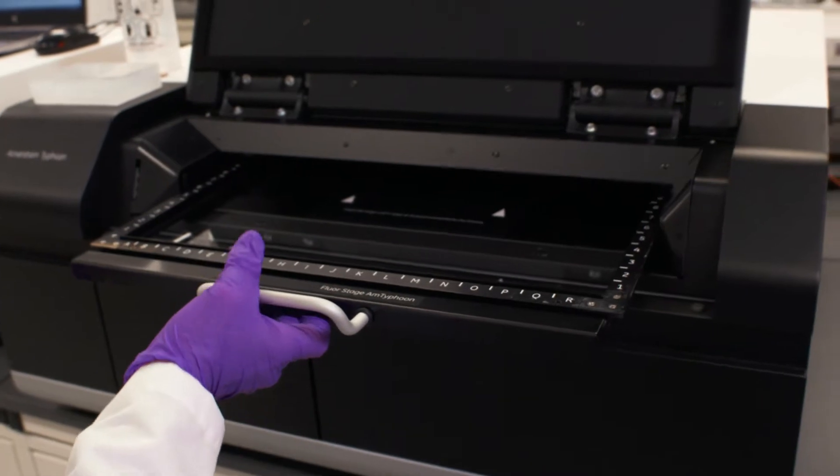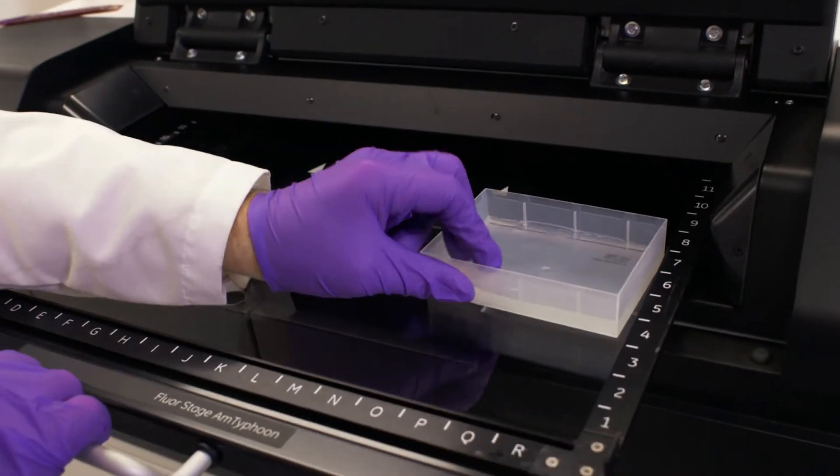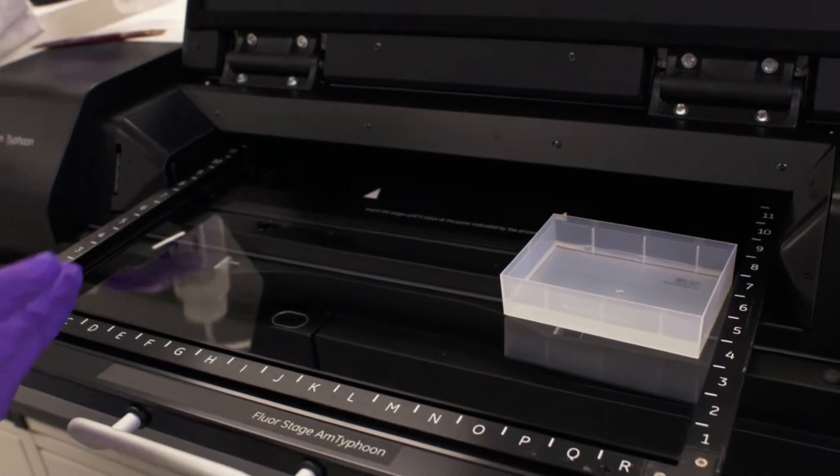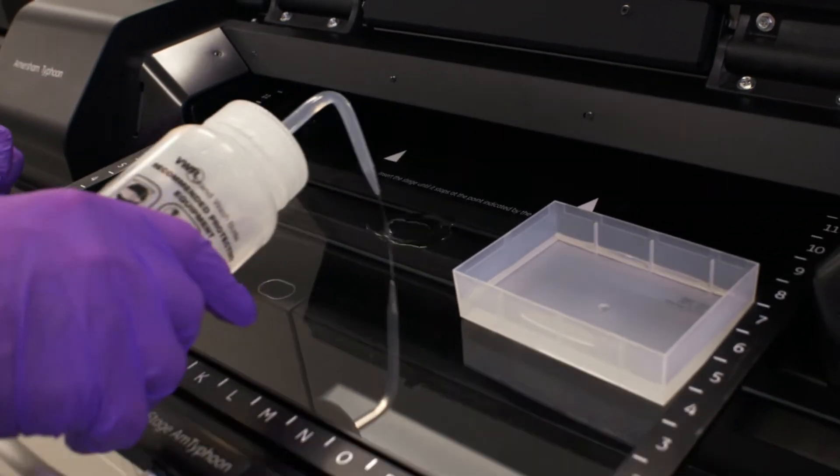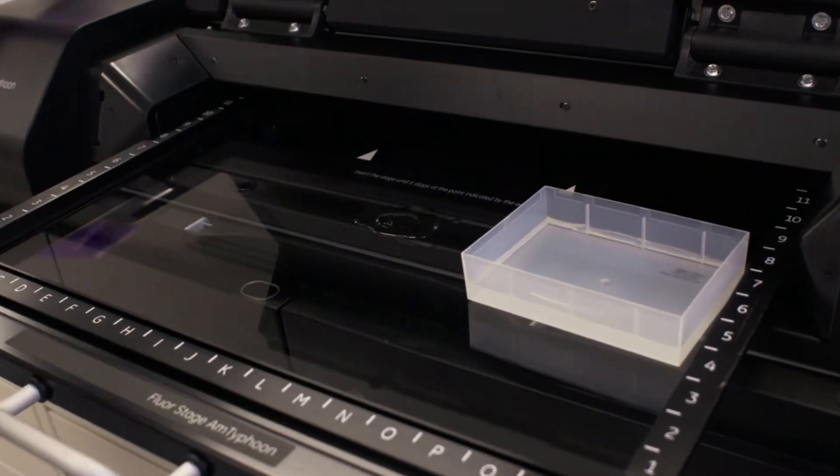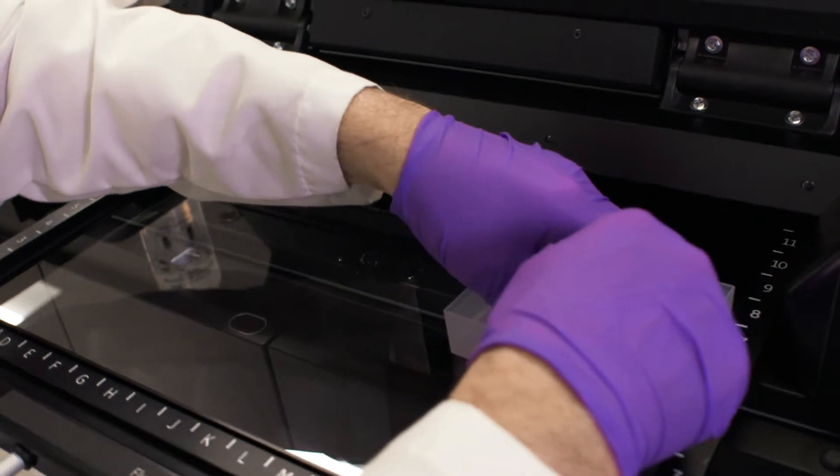In this case, we're going to work with a Coomassie stain gel. You can place the gel here to make it easier to work with, and it usually helps to place a little bit of water onto the platen. It's better to work towards the middle to get a more uniform signal and avoid any feedback you might get on the edges.